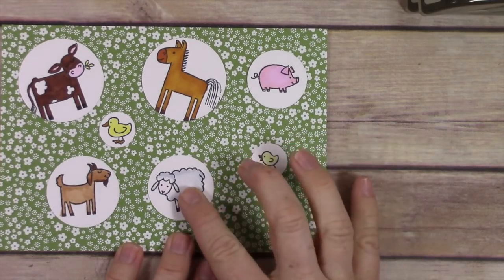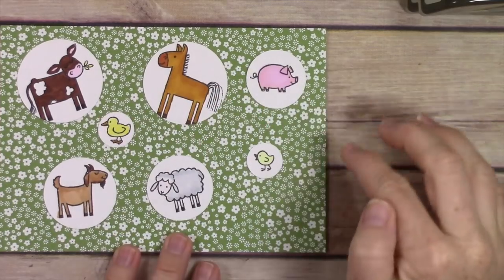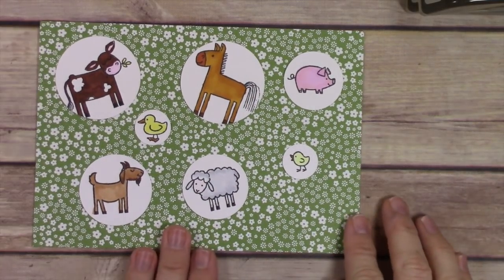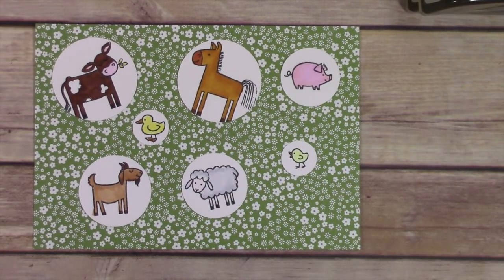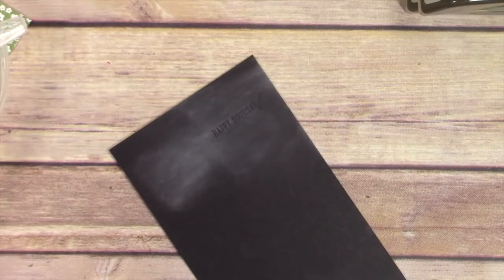After I got them all punched out, I went through and laid them on this designer series paper so I could get a gauge for where I would want them. I have to say they don't end up quite the same arrangement, but I really love how the little animals look on the green background because it's like they're standing in grass.